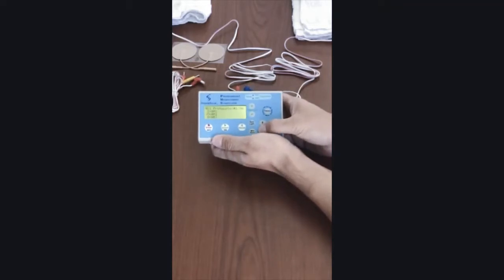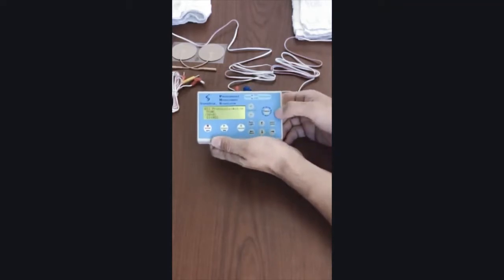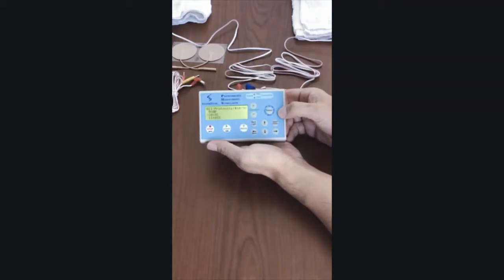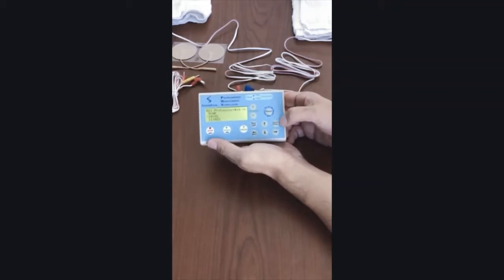To browse to a large protocol number, for example protocol number 55, you don't need to use the up and down arrows 55 times. Simply press the edit key and you can see the edit cursor is flashing on the protocol number.